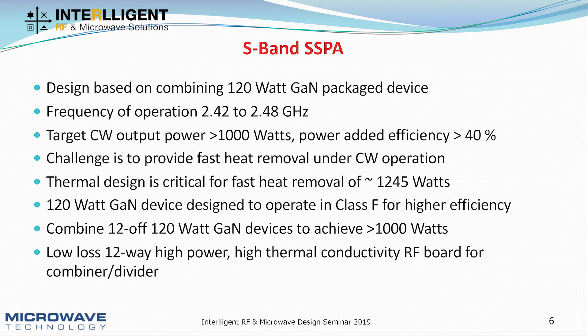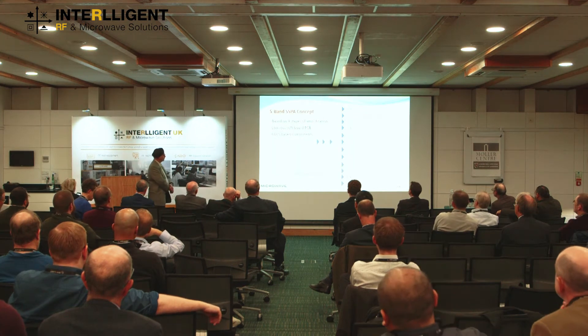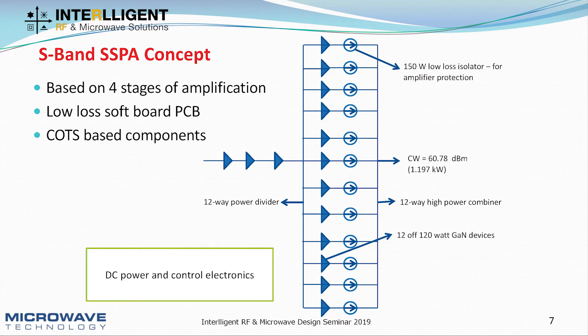12 devices were then combined to hit the 1 kilowatt output power target using low-loss microstrip combiners. The critical thing was also the heat generated, requiring good thermal conductivity from the actual material. The S-band SSPA concept uses 12 GaN devices, each with a low-loss isolator for protection, DC control electronics, four stages of amplification, low-loss Duroid circuit material — because every 0.1 dB is critical — and all components using COTS parts.